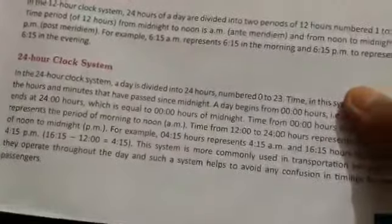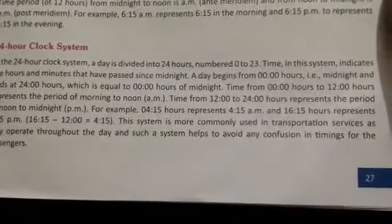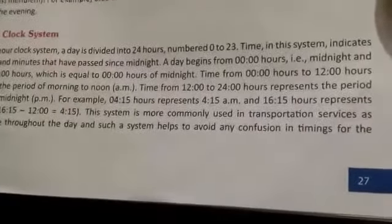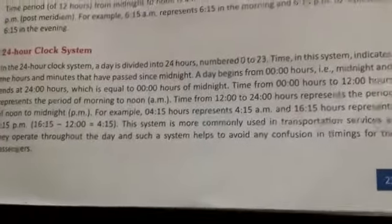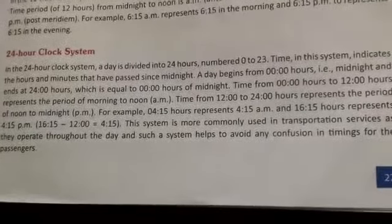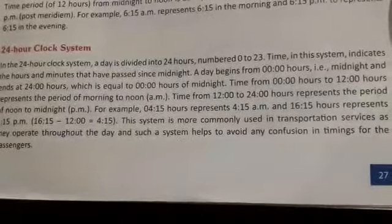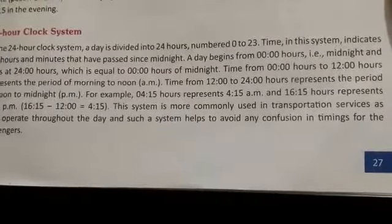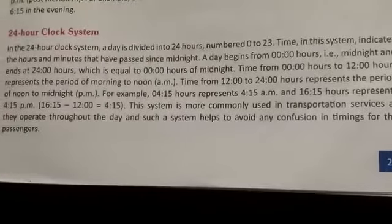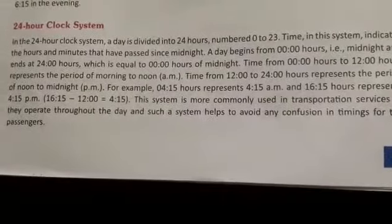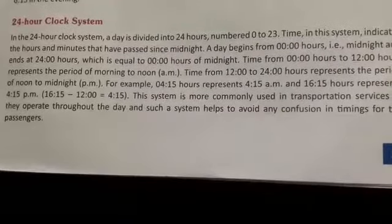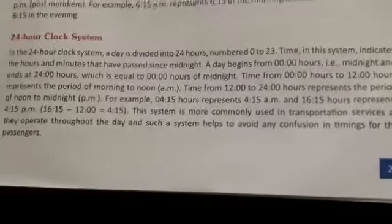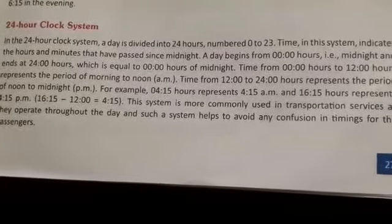Next, we will see the 24-hour clock system. In the 24-hour clock system, a day is divided into 24 hours, numbered 0 to 23. In this system, it indicates the hours and minutes that have passed since midnight. A day begins from 00:00 hours, midnight, and ends at 24:00 hours, which is equal to 00:00 hours of midnight. Time from 00:00 hours to 12:00 hours represents the period of morning to noon. Time from 12:00 to 24:00 hours represents the period of noon to midnight. For example, 04:15 hours represents 4:15 AM and 16:15 hours represents 4:15 PM. This system is more commonly used in transportation systems.